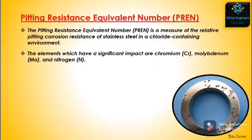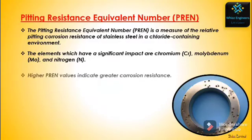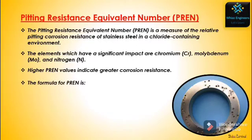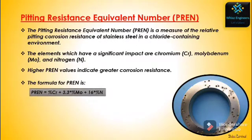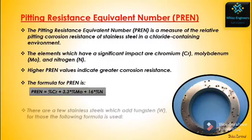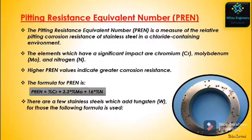The elements which have a significant impact are chromium, molybdenum, and nitrogen. Higher PREN values indicate greater corrosion resistance. The formula for PREN is: % Cr + 3.3 × % Mo + 16 × % N.